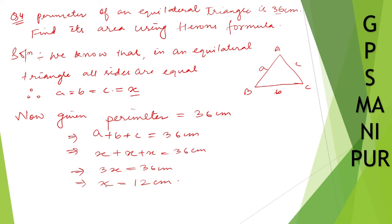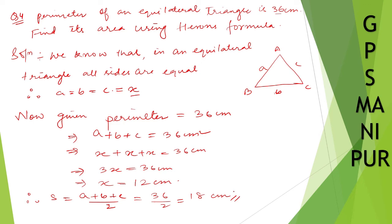We got the side as x equal to 12 centimeters, where a, b, and c are all equal. Now, s equals perimeter divided by 2, that is a plus b plus c divided by 2, which is 36 divided by 2, so s equals 18 centimeters.